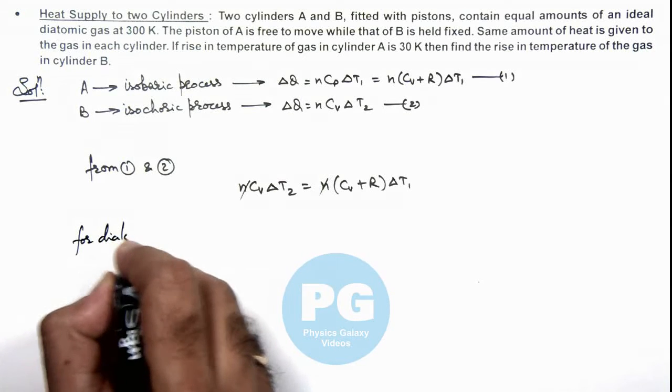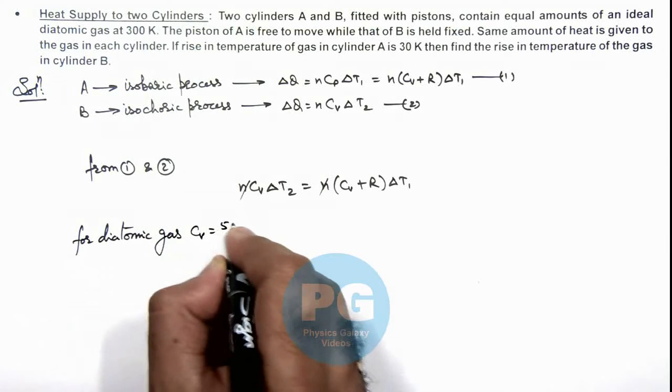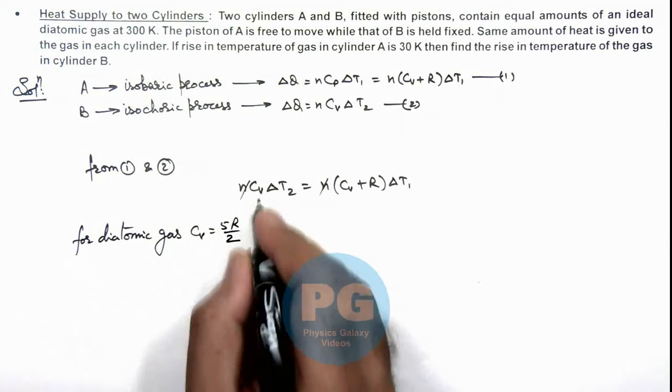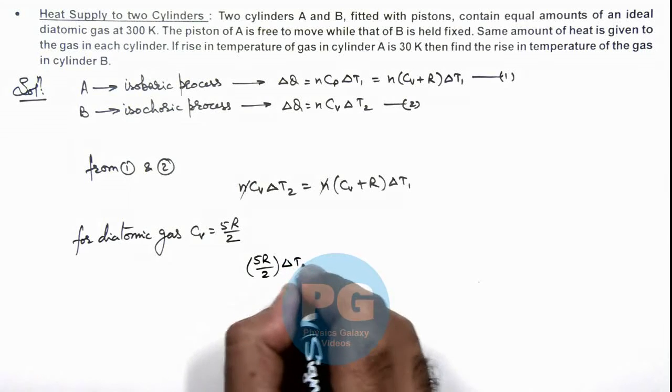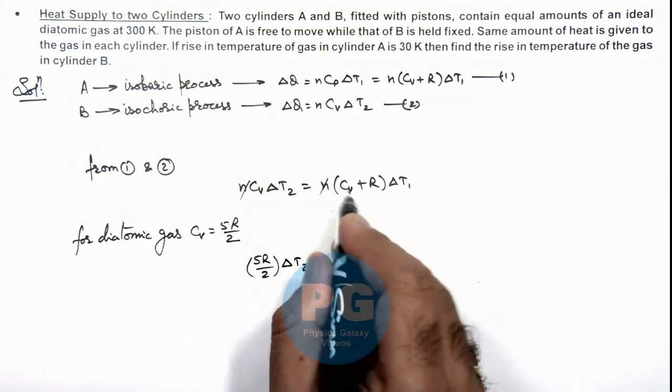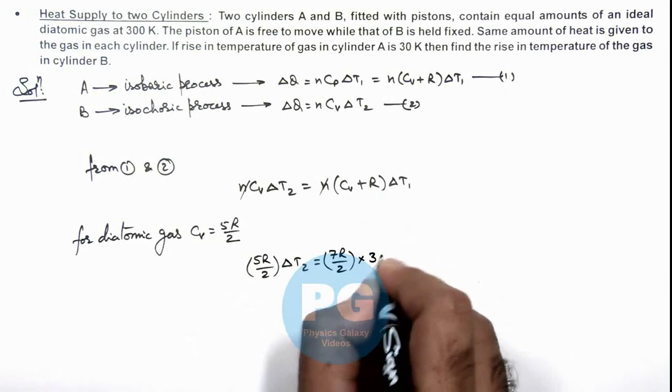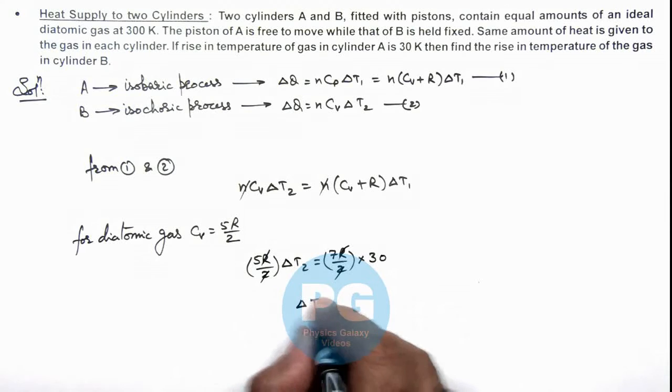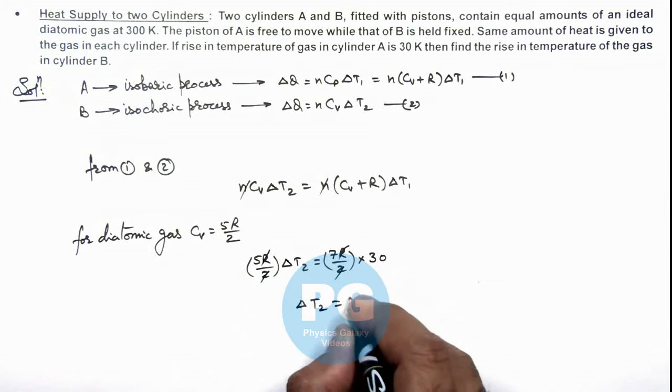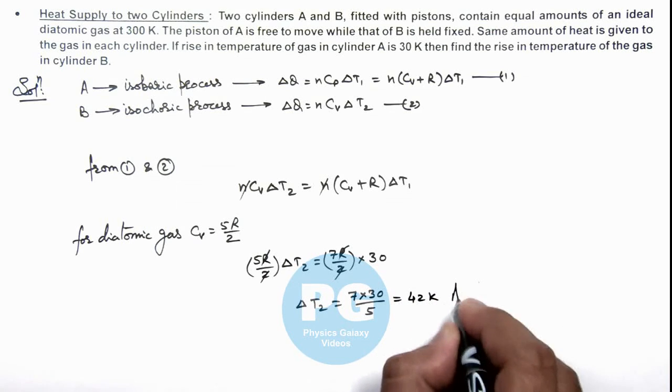Cv we can take as 5R/2. So here we can write (5R/2)ΔT₂ equals (5R/2) plus R, which is (7R/2) multiplied by 30. So here R/2 gets cancelled out and the value of ΔT₂ we are getting is 7 multiplied by 30 divided by 5. So this is 42 Kelvin, that is the result of this problem.